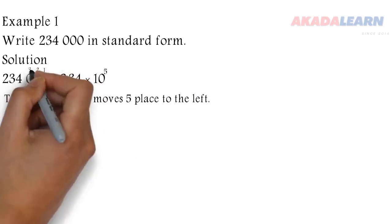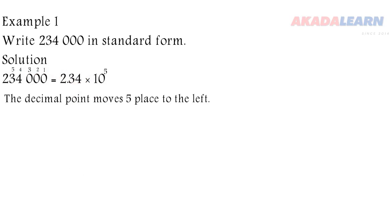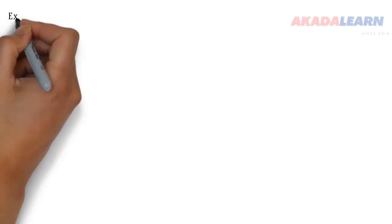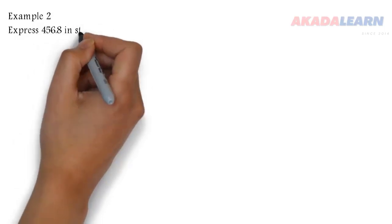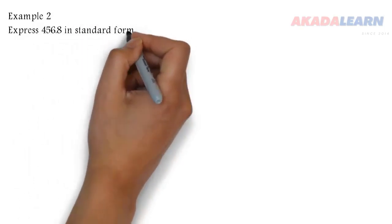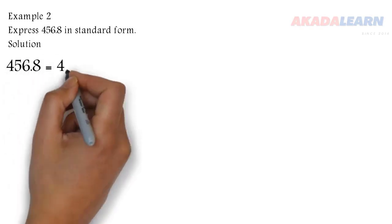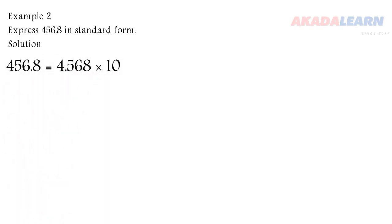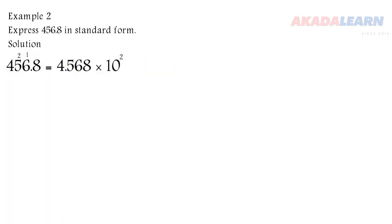So 1, 2, 3, 4, 5. We will write the number 456.8. This is the same thing as 4.568 times 10 raised to power 2. So also, the decimal point moves two places to the left.